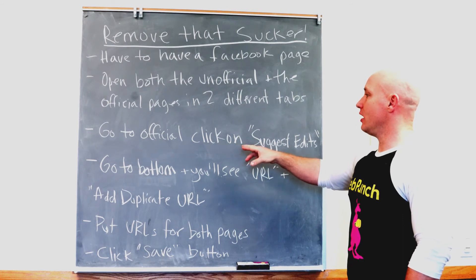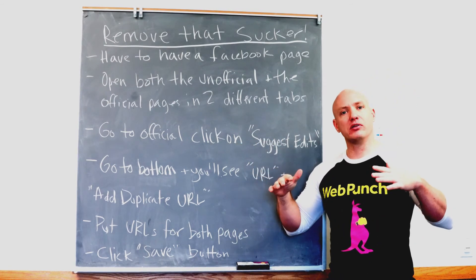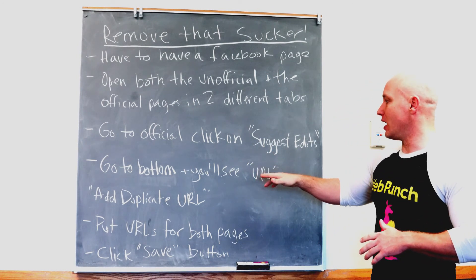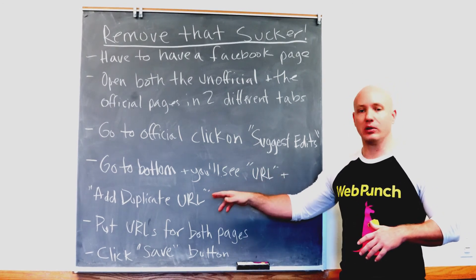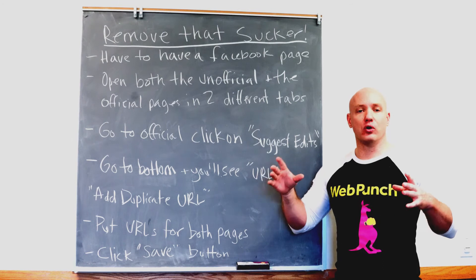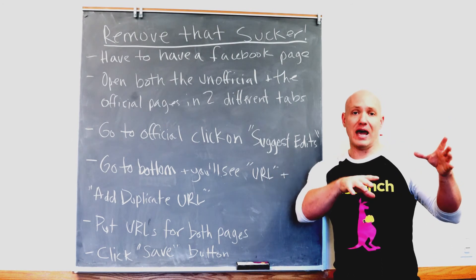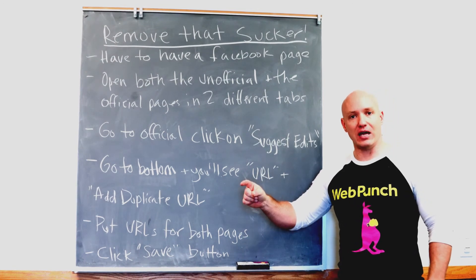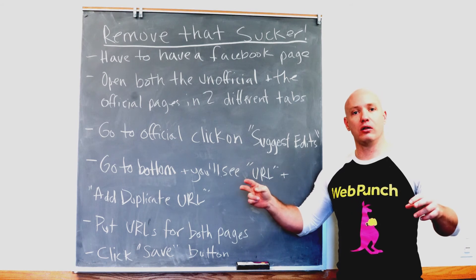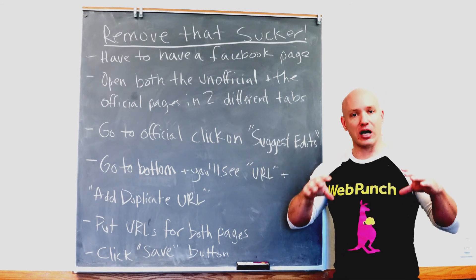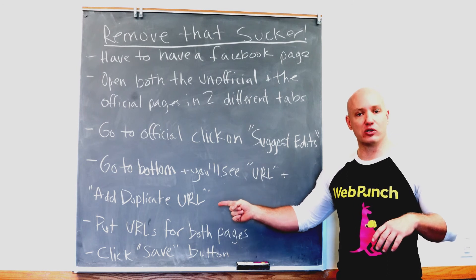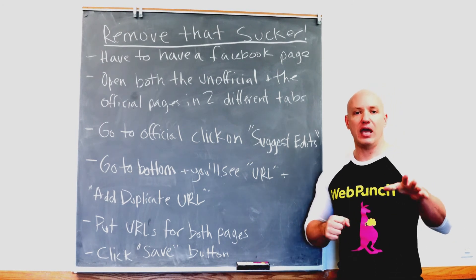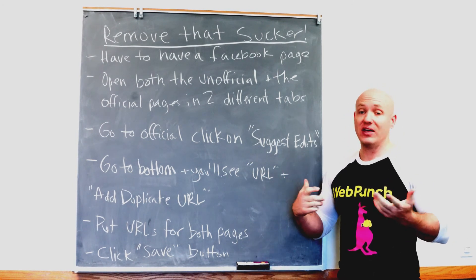Then you're going to go to your official page and click 'Suggest Edits' towards the middle of the screen. After you click on that, go to the bottom and you'll see 'URL + Add Duplicate URL.' You're going to go to the tab that has your official page, copy that URL, and insert it there. Then go to the unofficial page tab, copy that URL, and put that in as well. Click the save button — we'll insert screenshots so you can follow along.